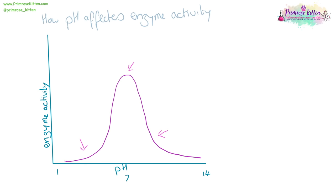Our curve for pH is much more symmetrical. We still have an optimal pH, but when it is too high or too low, the bonds aren't going to be in place, so the active site of the enzyme is going to be broken down. So again, it is going to be denatured.